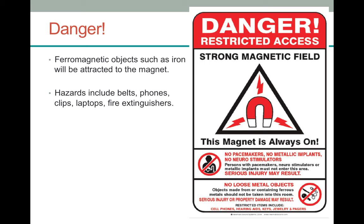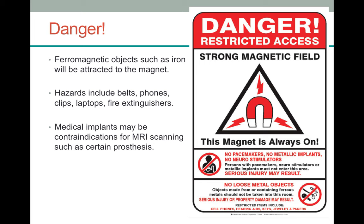Patients might also have certain medical implants which are contraindications for MRI scanning, such as certain prostheses. Implants could include a pacemaker, shell fragments in the eyes — which is quite common in those who have worked in the steel industry — as well as metal plates or joints inserted during operations. Screening of the patient is therefore very important. It is necessary to ask questions before the individual even gets into the MRI centre, because if someone had a pacemaker, we wouldn't even want to let them into the building, never mind the scanning room.